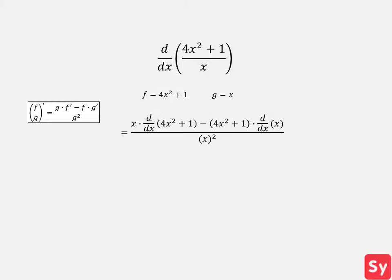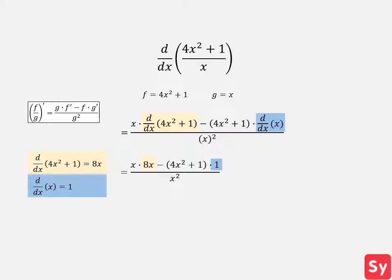Next, we compute the derivatives of 4x squared plus 1 and x using the power rule and constant rule. We substitute these values back into the equation, and this simplifies to 4 minus 1 over x squared, our answer.